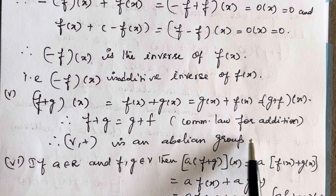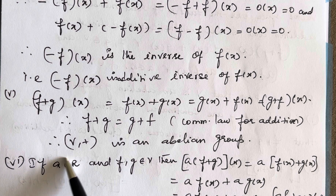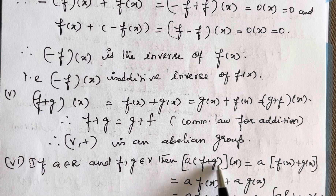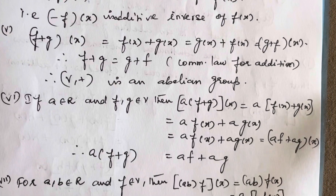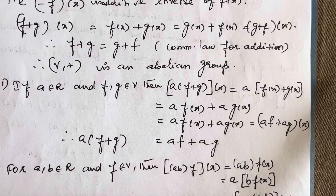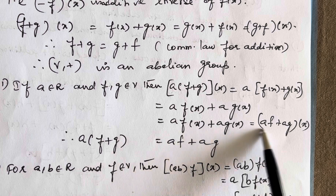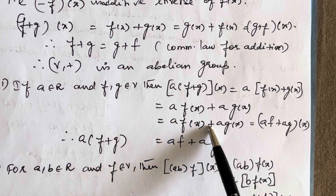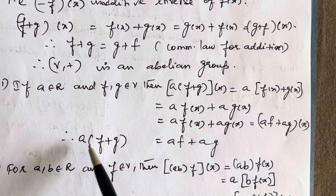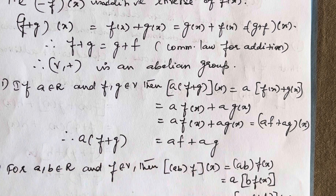Now let us see the remaining axioms for any a in R. For scalar distributivity: a·(f+g)(x) = a·(f(x)+g(x)) = a·f(x) + a·g(x) = (af+ag)(x). That means a·(f+g) = af + ag.